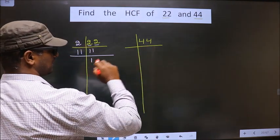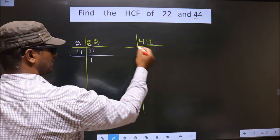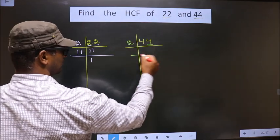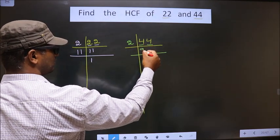Now, for this number, last digit is 4, which is even. So we take 2 here. First number is 4. When do we get 4 in the 2 table? 2 times 2 is 4.